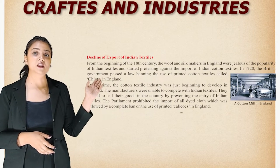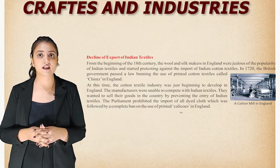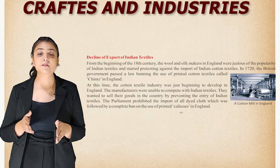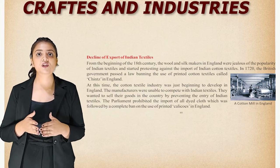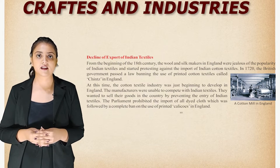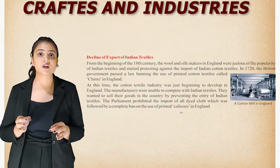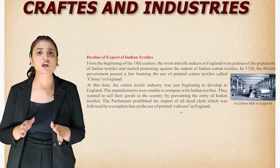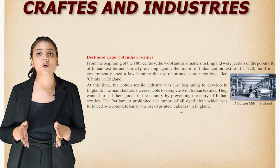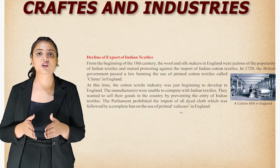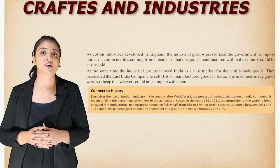Now let's talk about the decline of export of Indian textiles. From the beginning of the 18th century, wool and silk makers in England were jealous of the popularity of Indian textiles and started protesting against their import. In 1720, the British government passed a law banning the use of printed cotton textiles called 'chints' in England. The cotton textile industry was just beginning to develop in England, and manufacturers were unable to compete with Indian textiles. The parliament prohibited the import of all dyed cloth, followed by a complete ban on the use of printed calicoes in England.